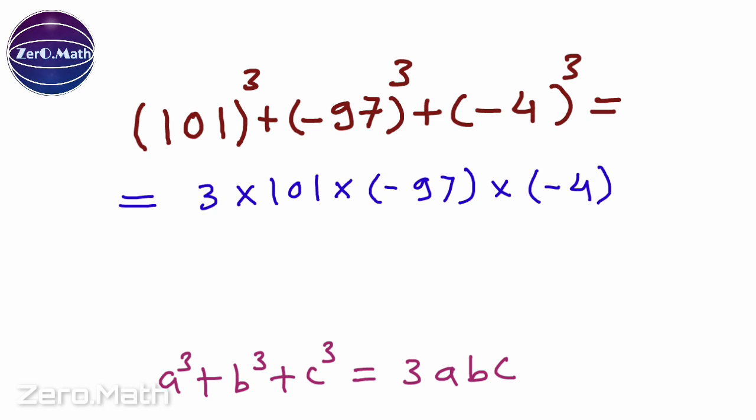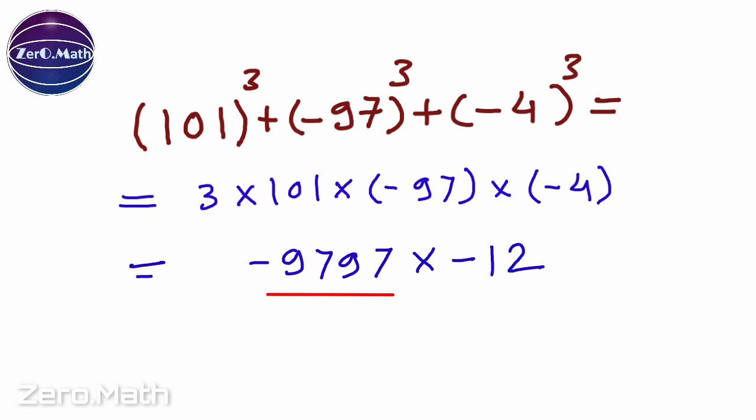Let's multiply 101 by 97. We'll get the result as 9797. I will write it as minus 9797 because 97 is negative. Now you will ask me how could I do this multiplication so easily? This is the property of number 101.